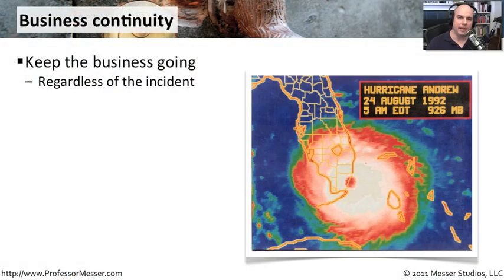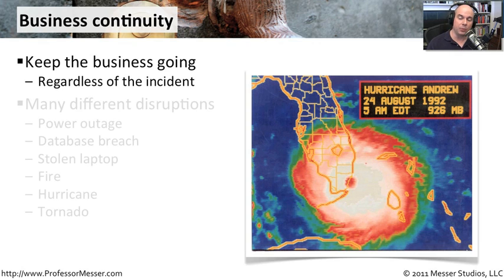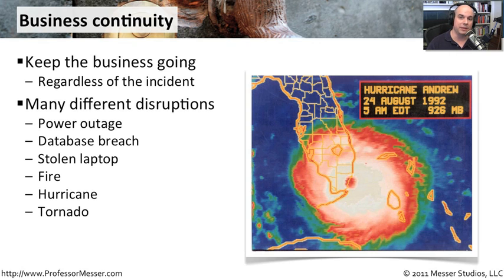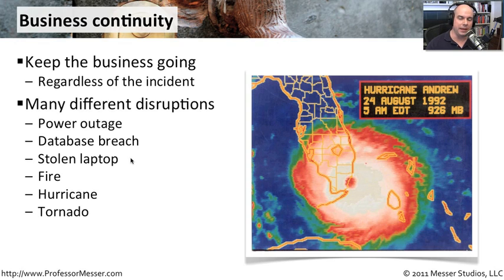Business continuity is all about keeping the business going, making sure that you're able to provide services or products to your end users and your customers. It really doesn't matter what the incident is — it can be pretty far ranging. You could have power outages, a database breach, or a stolen laptop. But it also might be a much bigger problem, like a fire, a tornado, or a hurricane — something that provides a very big challenge to making sure your organization continues to function.